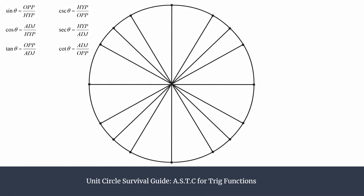Let's look at this acronym in a little more detail. A belongs to the first quadrant, S to the second, T to the third, and C to the fourth. This is telling us which trig functions are positive in particular quadrants. In the first, all will be positive. In the second, sine and its reciprocal cosecant will be positive. In the third, tangent and its reciprocal cotangent are positive. And in the fourth, cosine and its reciprocal secant are positive.